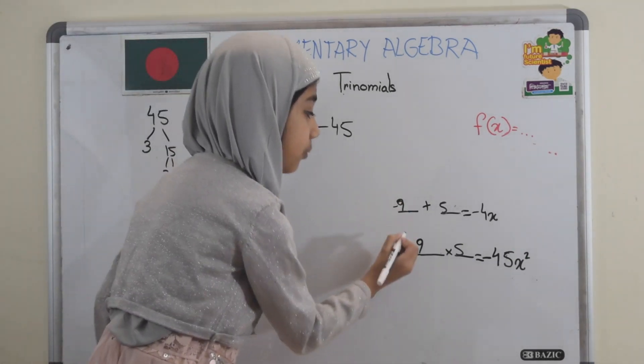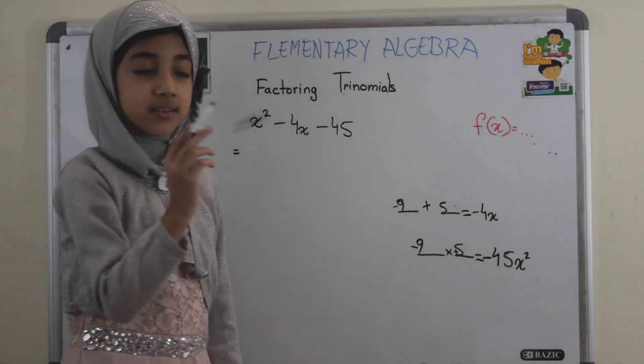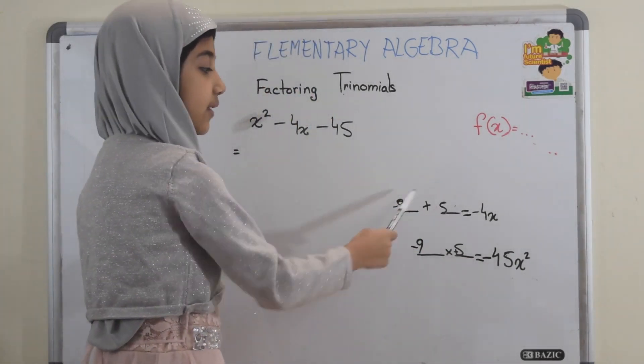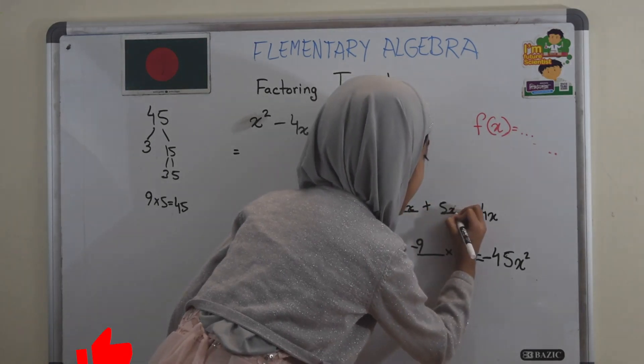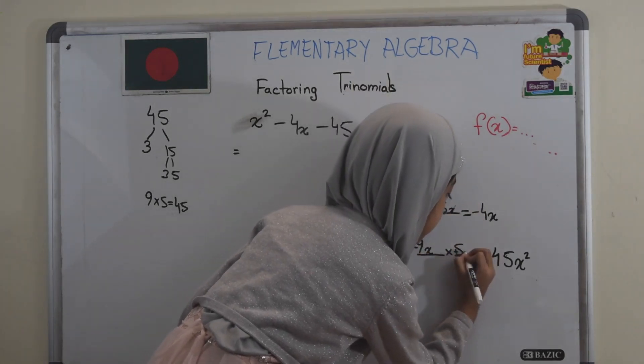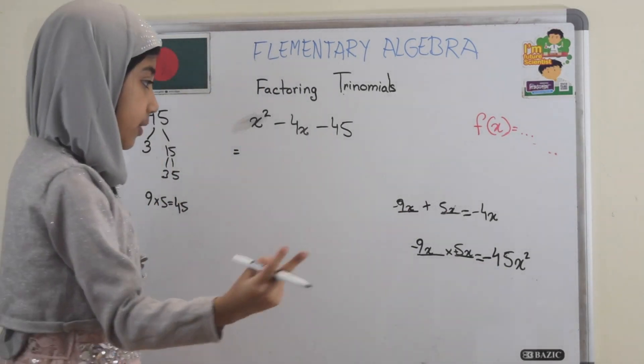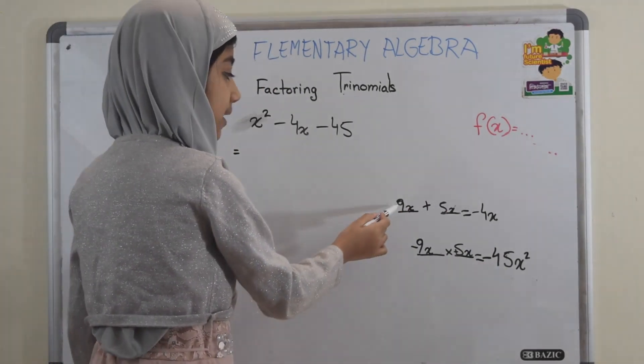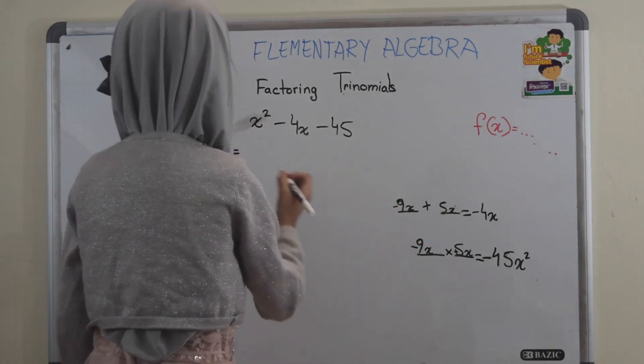But there's still one more thing. We didn't give the x's here. So we should add the x's. So now, we have our two numbers: minus 9x and plus 5x.